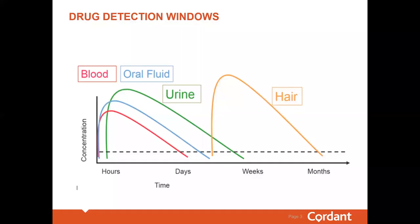I often get asked: what is the best matrix for drug testing? The answer is, there is no best. The decision could come down to the information you're trying to capture and the environment you're working in. Are you trying to capture impairment? Are you trying to capture recent use or historical use?